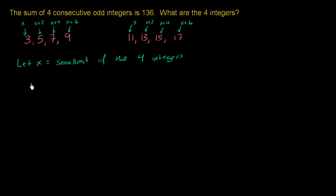So the smallest one is x. The next smallest one is going to be x plus 2. The next one after that is going to be x plus 4. And then the one after that is going to be x plus 6. So this is the sum of the four consecutive odd integers. They tell us that is going to be equal to 136. And now we can just literally solve for x. We have just one unknown here.